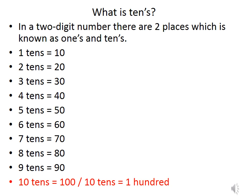Similarly, what is 10's? In a 2 digit number, there are 2 places which is known as 1's and 10's. 1 ten is known as 10, 2 tens is equal to 20, 3 tens is equal to 30 and so on. As soon as we write 10 tens, we can also say it as 100.